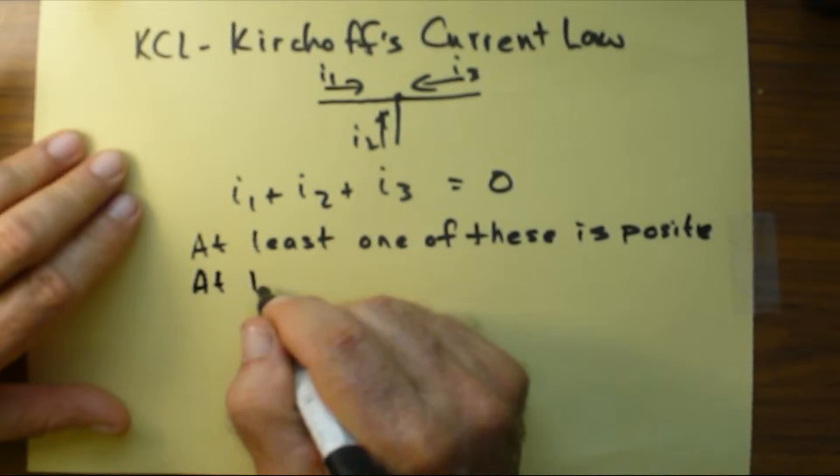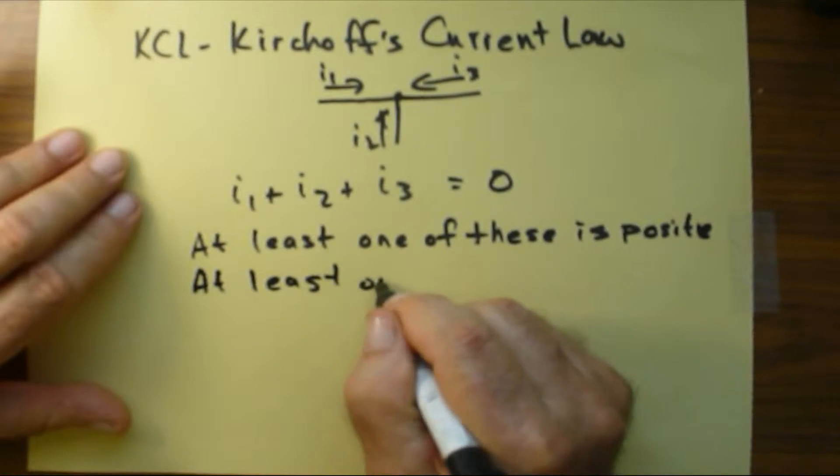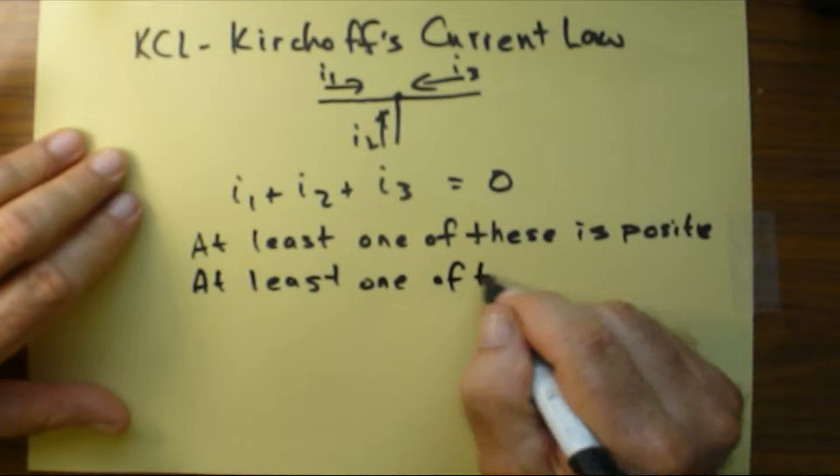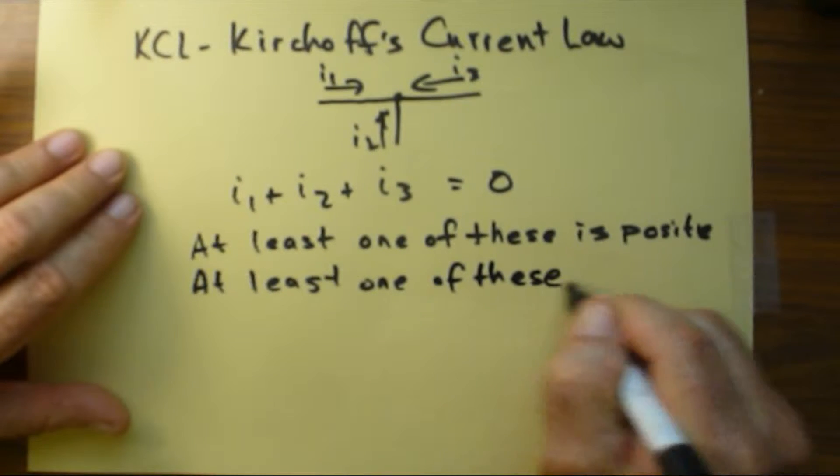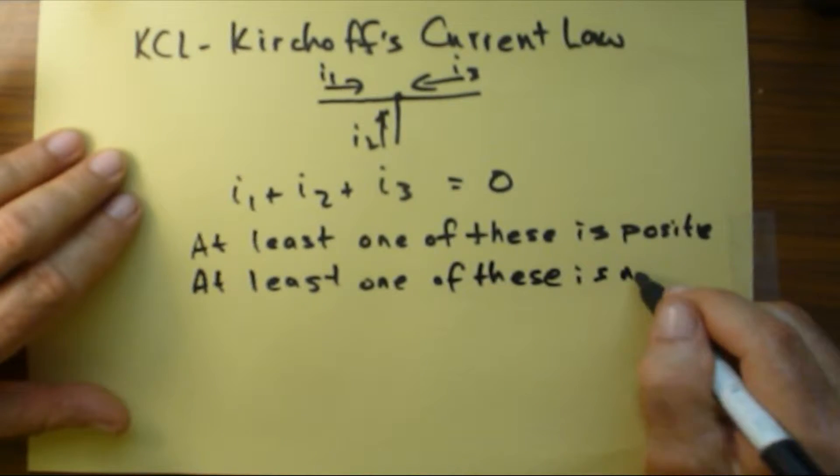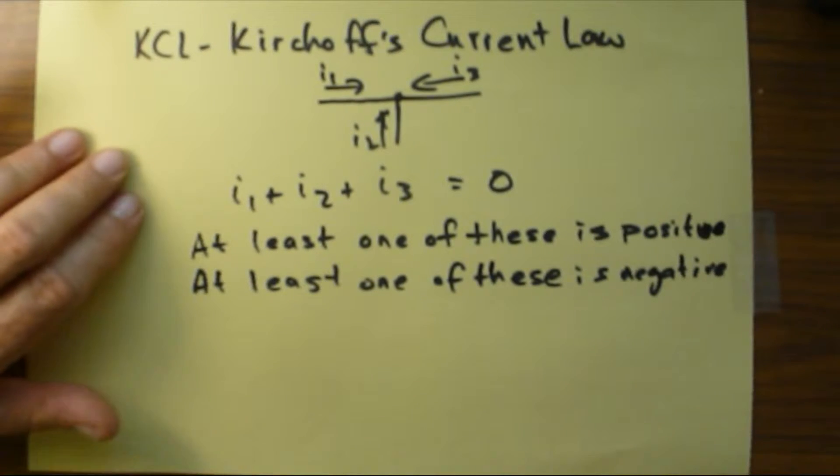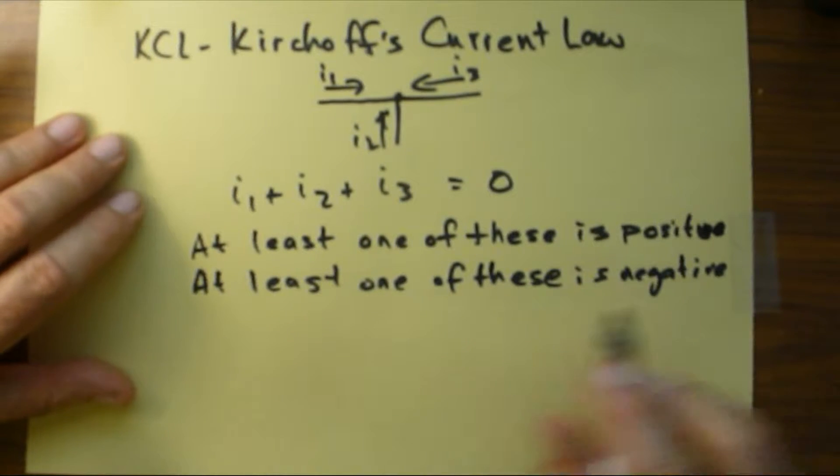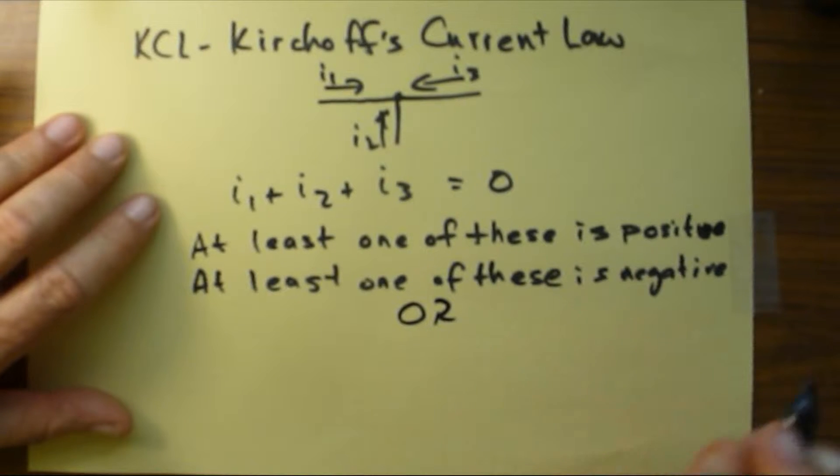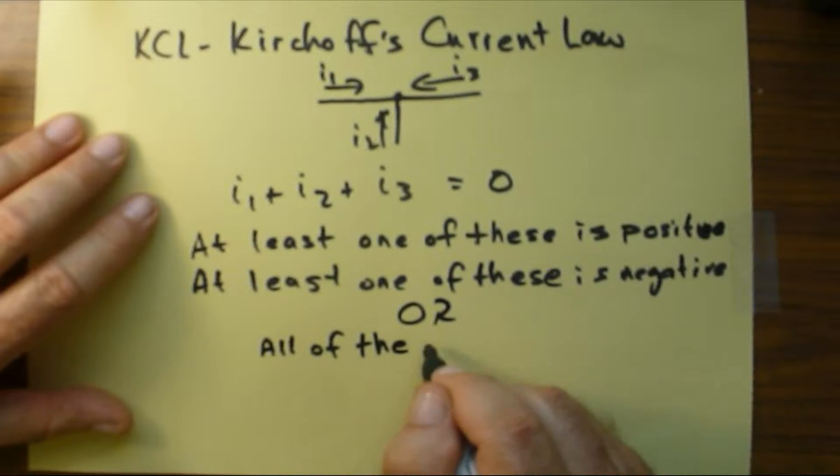And also that at least one of these is negative, or all of these are zero.